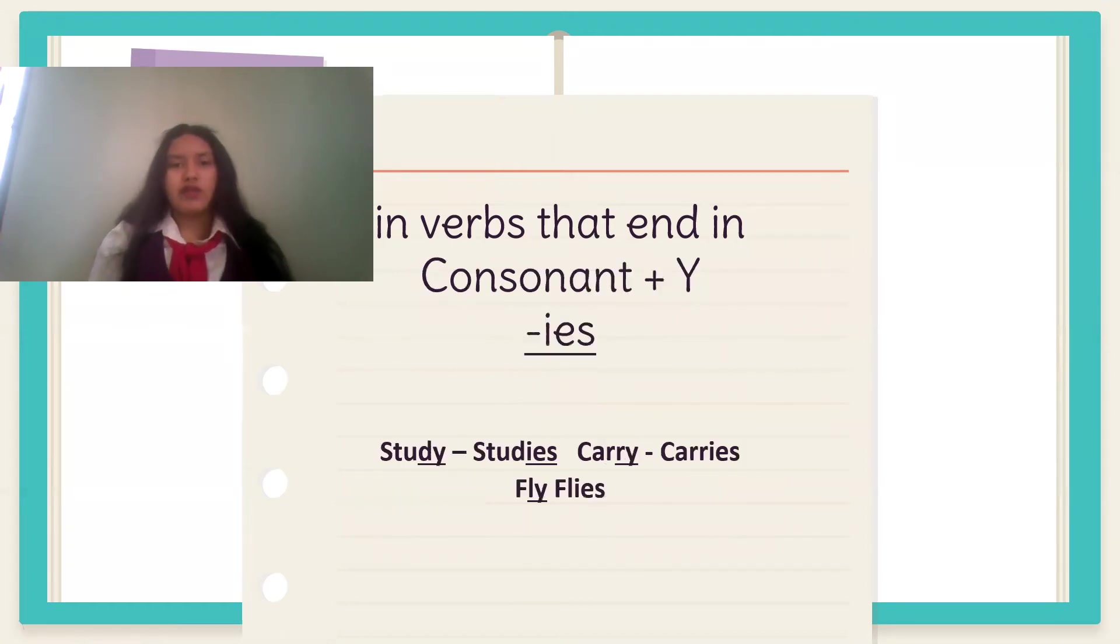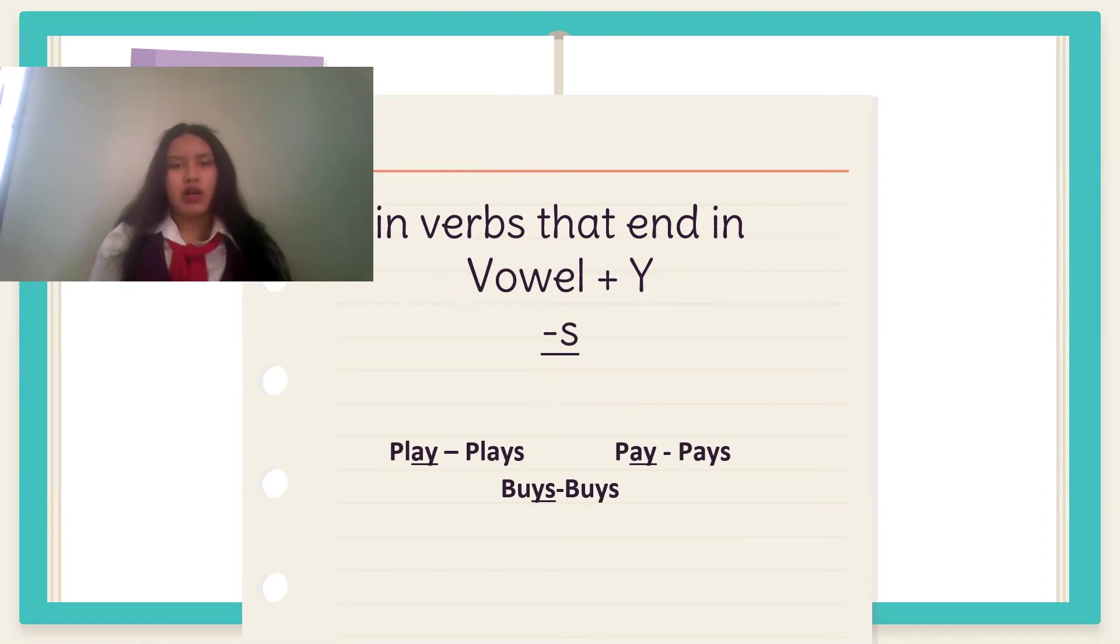When the verb is finished with a consonant and y, you eliminate the y and you include ies. When the verb is finished with a vowel and o or y, you'd include only the s.